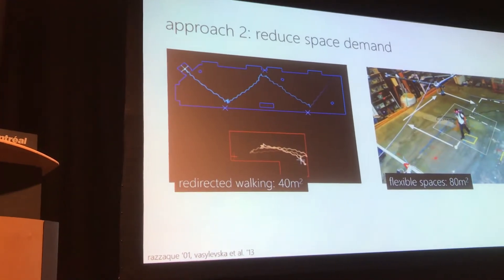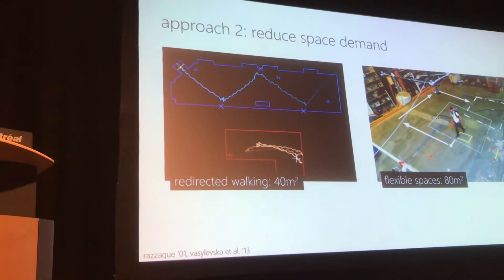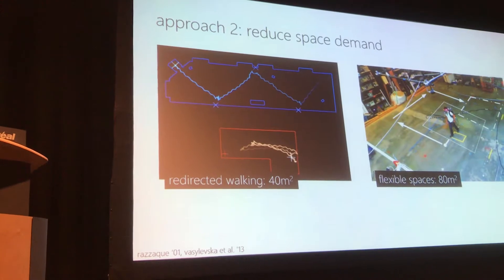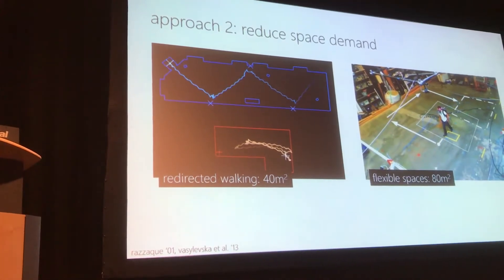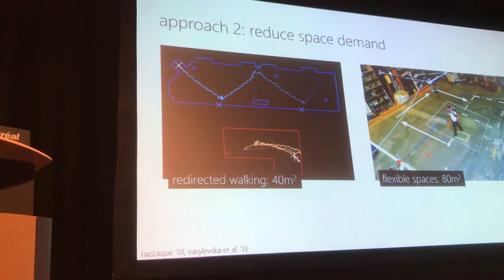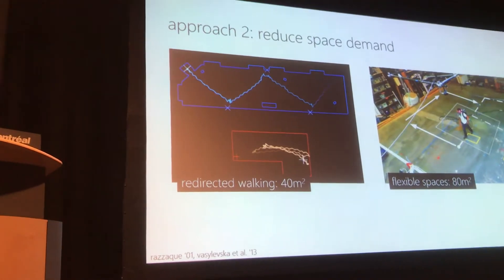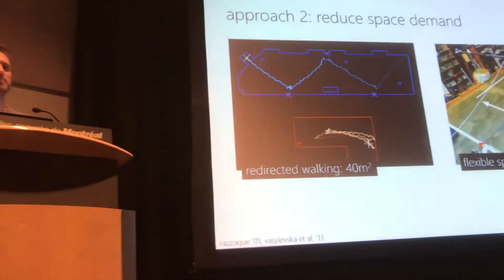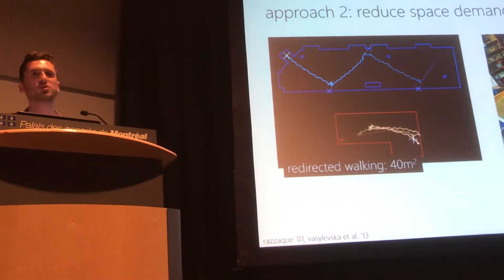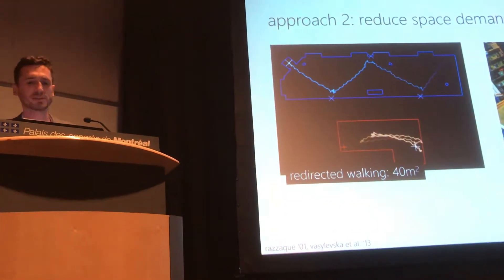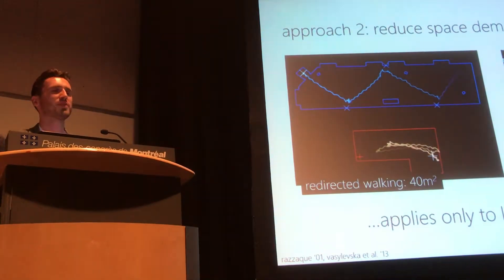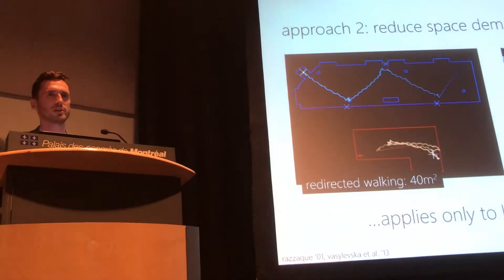The second approach is to reduce space demand. There are a lot of space compression techniques, with redirected walking being among the most popular. Basically, you change the motion mapping only imperceptibly, so you still have a real walking sensation but use less space. However, this applies only to lab-scale VR, and not to consumer-scale.